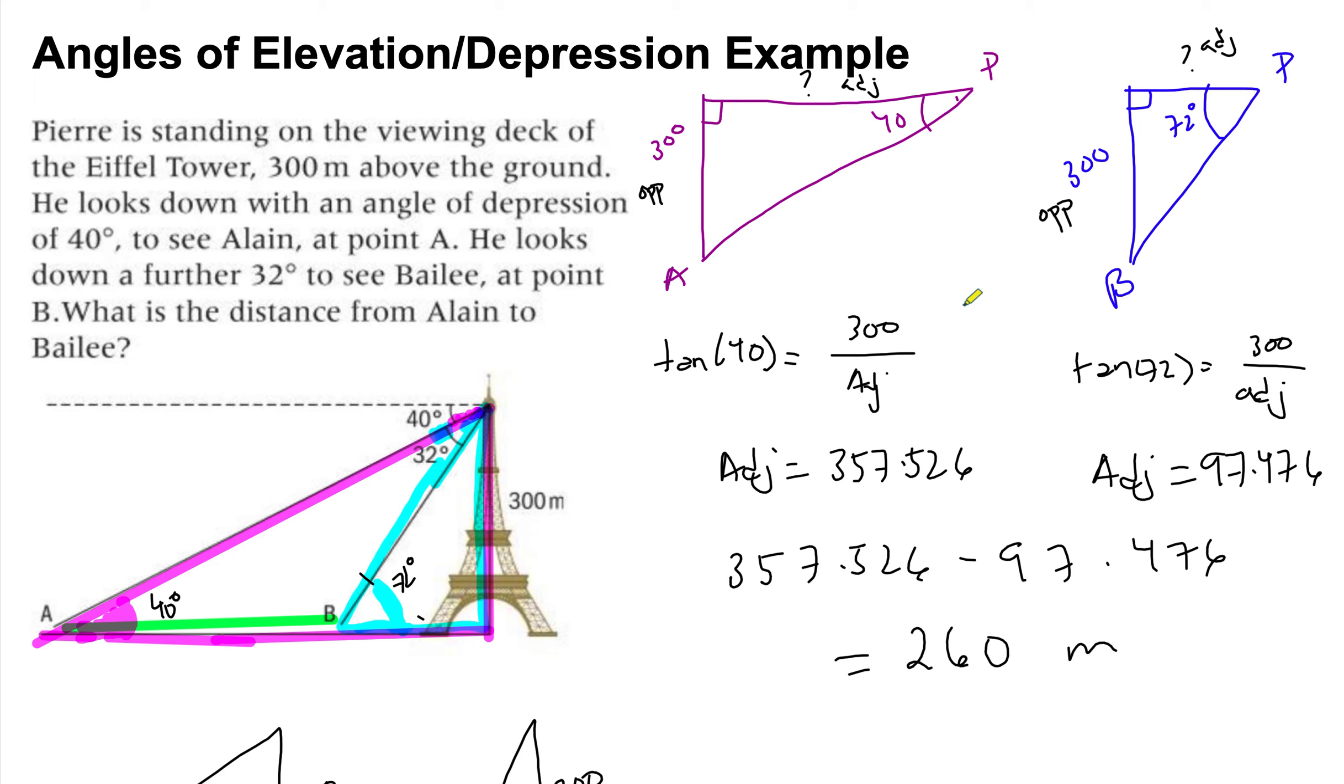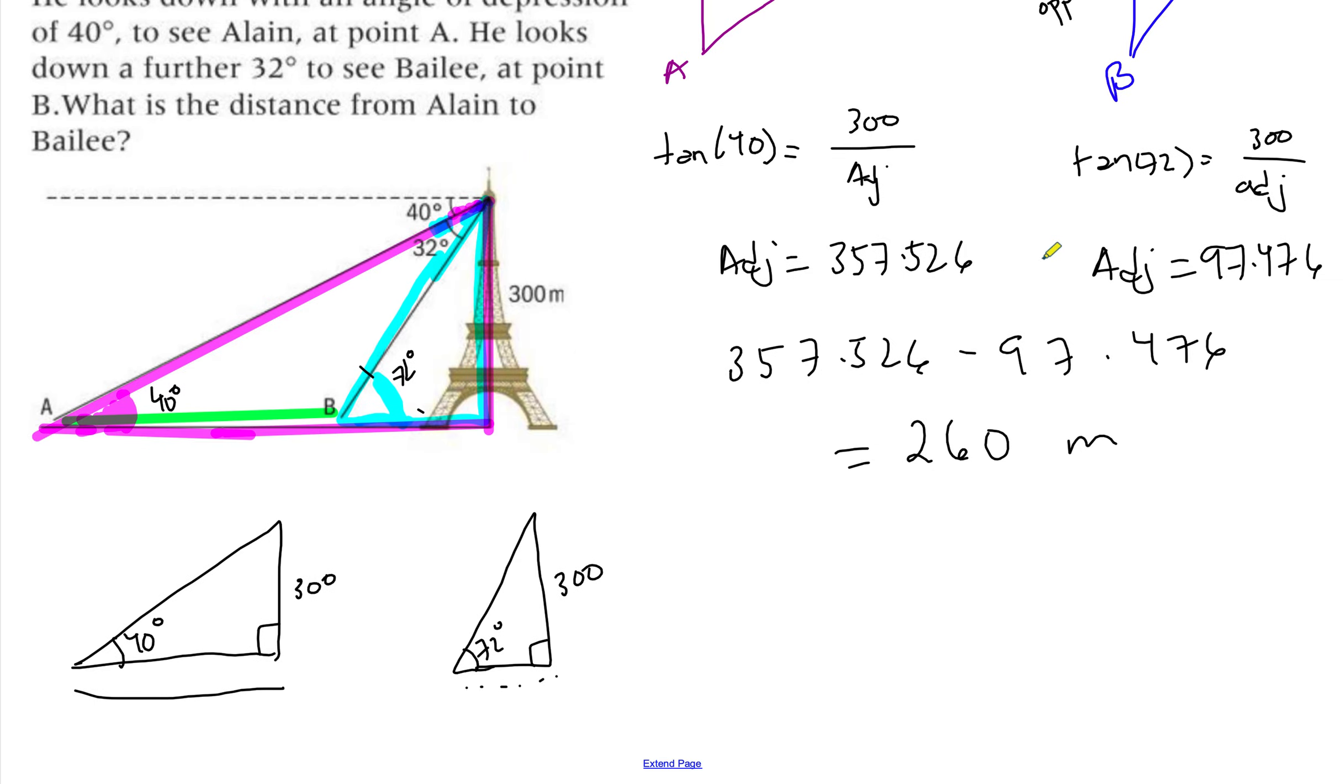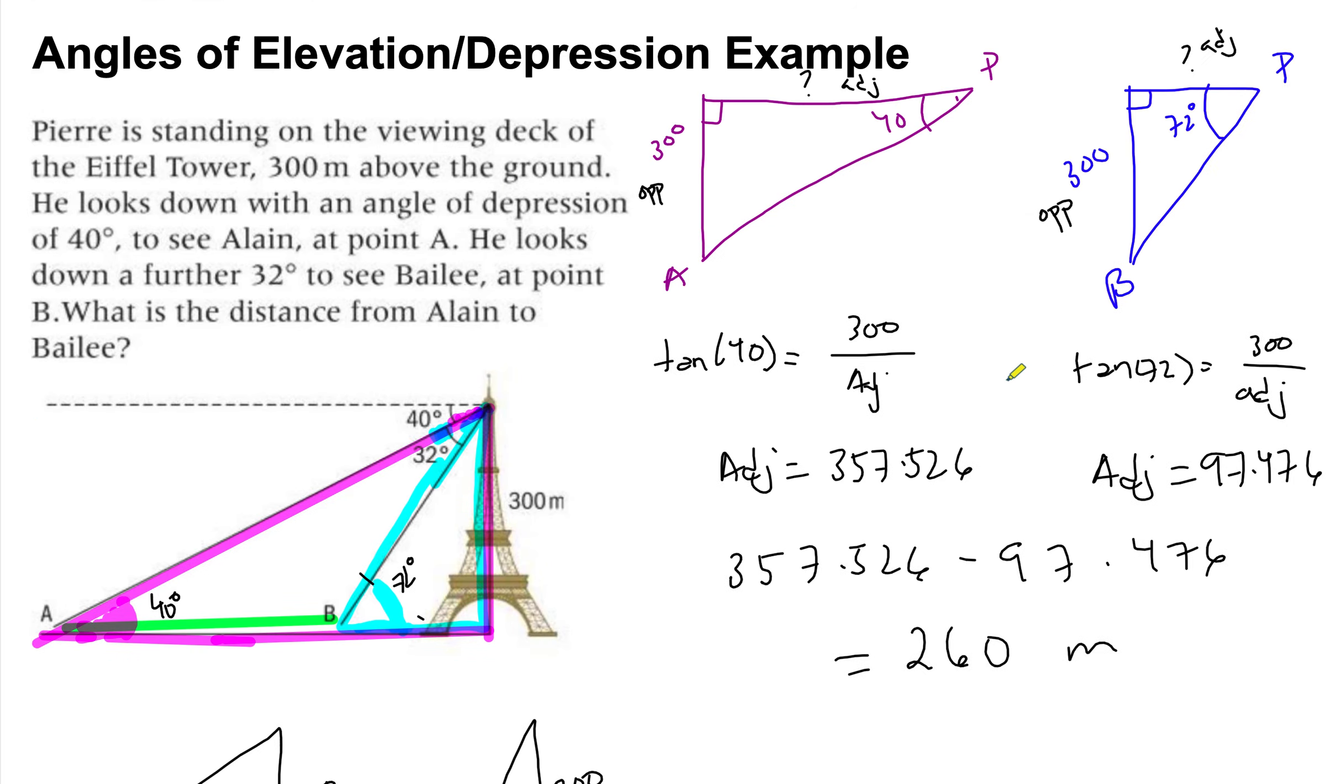Once you're okay with this type of example, all the other examples that involve two angles of depression or elevation follow the same procedure. They usually require you to find two links and then subtract them from each other. So try to immediately practice a question from here on so that you can solidify your understanding regarding this type of questions.